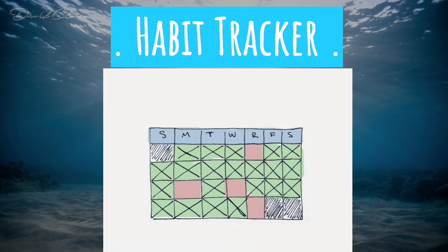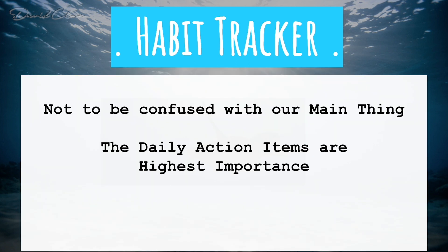The habit tracker is a separate tool from the main daily action item list — don't confuse the two. Keep the main thing the main thing: the daily action items of highest importance that get you closer to your goal. But you can also use the calendar as a habit tracker.